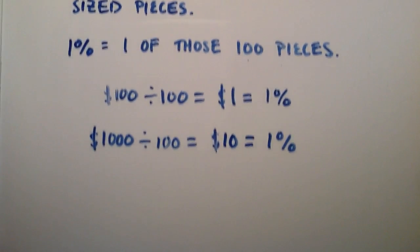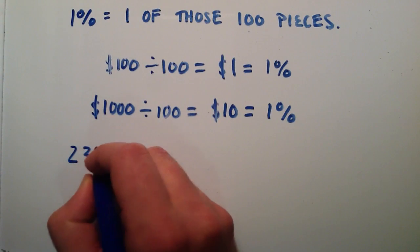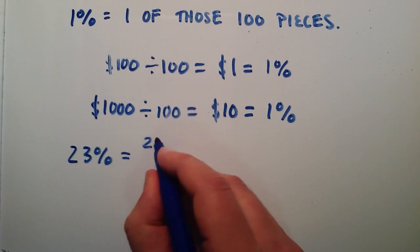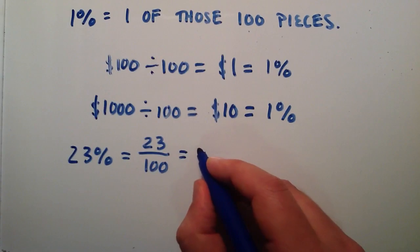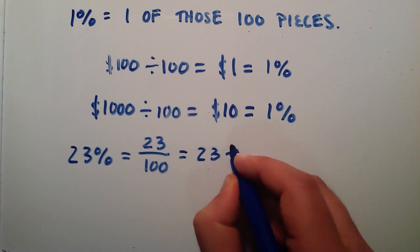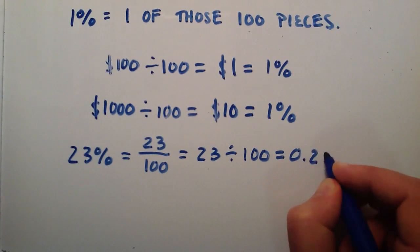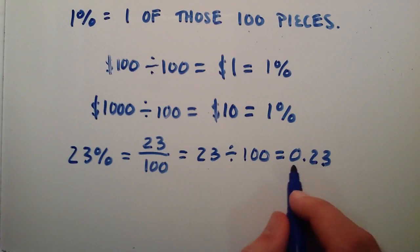So let's look at another example here. Let's say that we want to find 23% of something. Well, one way we can write 23% is it's really 23 pieces out of 100. So we can write 23 divided by 100, 23 out of 100 pieces as a fraction. And this is really just a division problem now. 23 divided by 100 is equal to 0.23. So this is another way that we can write a percentage as a decimal.